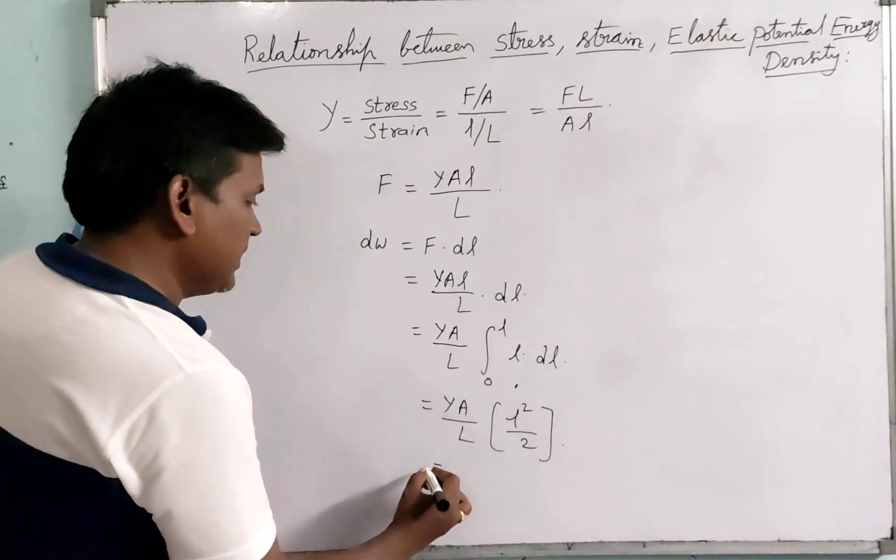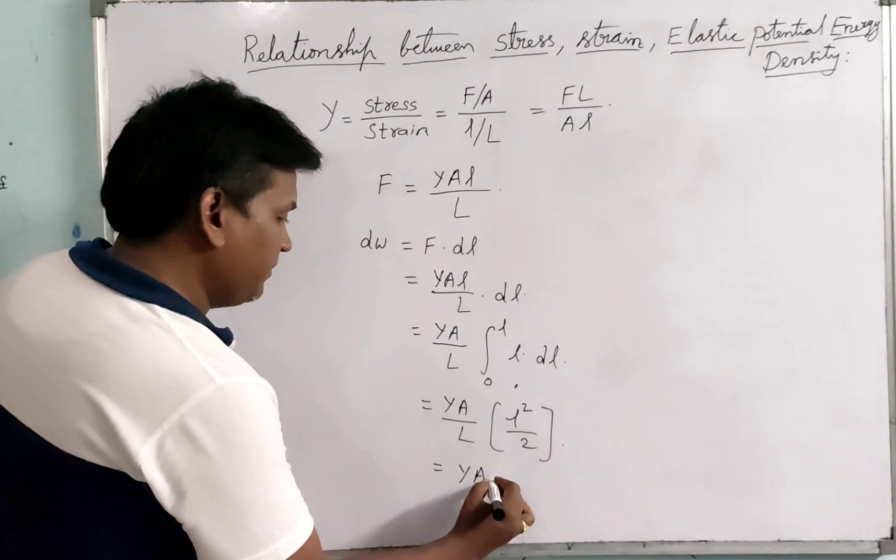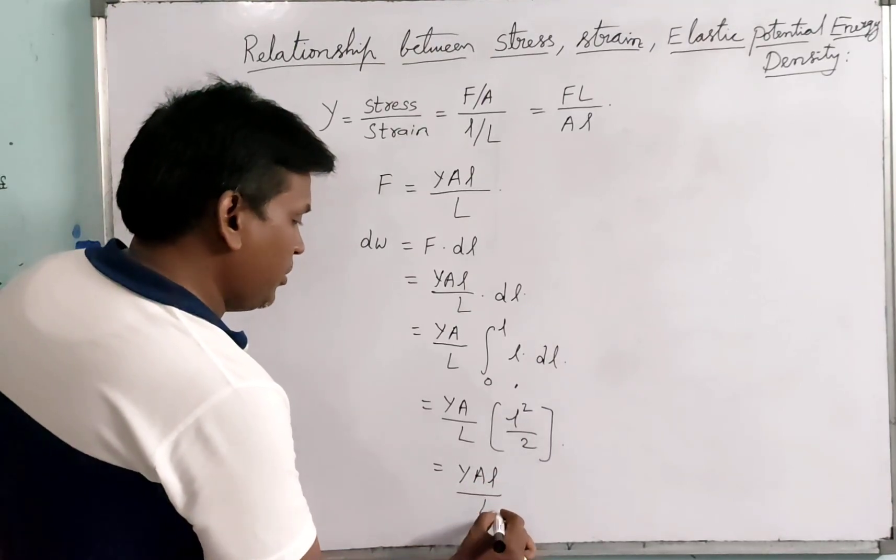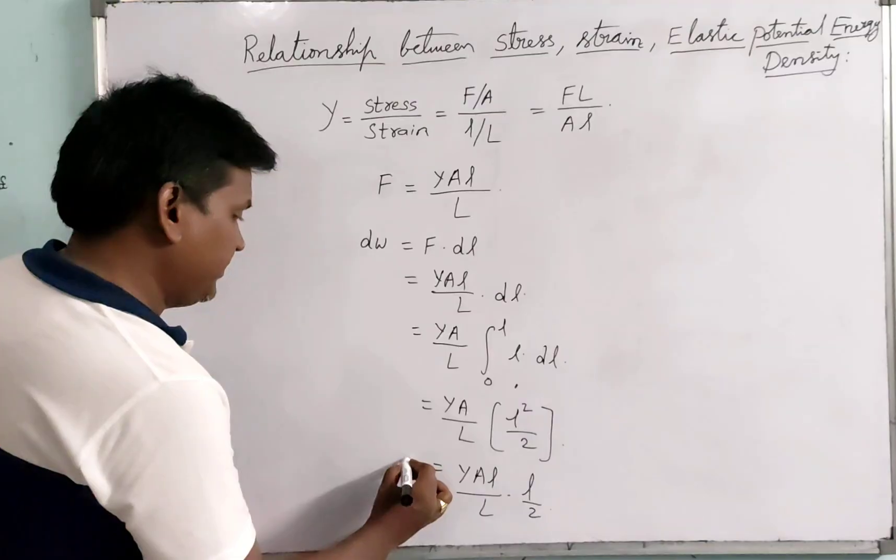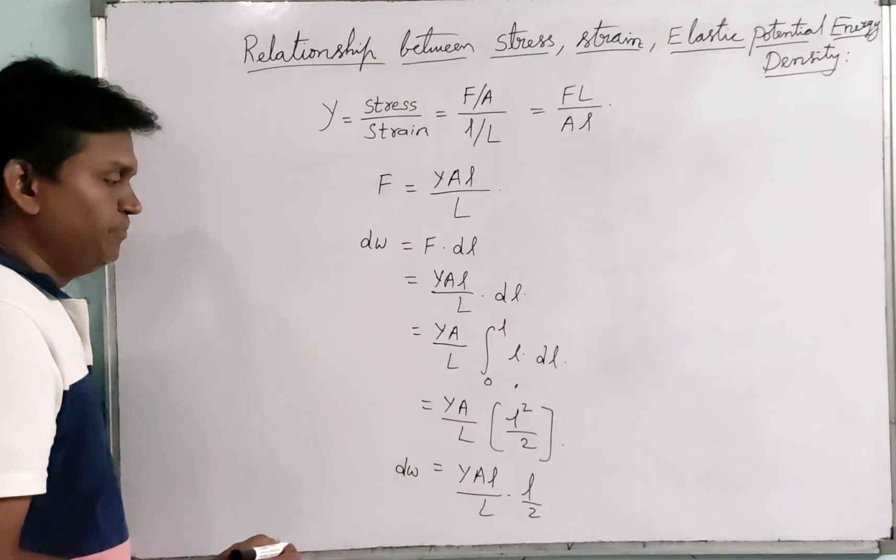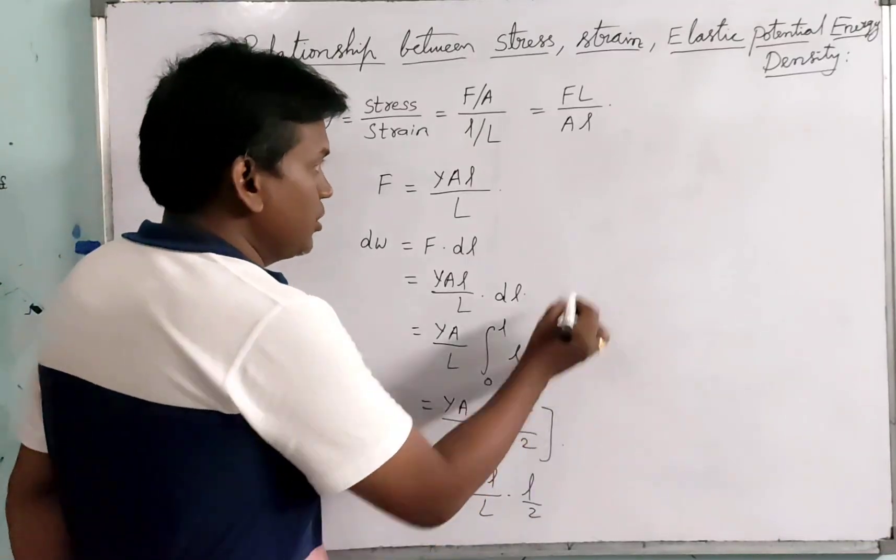This can be rearranged as Y AL upon L into L by 2. This is the work done, and that is Y AL upon L by 2.